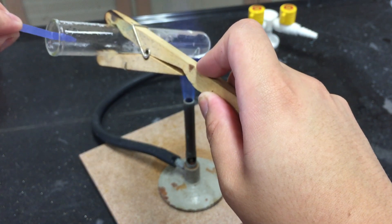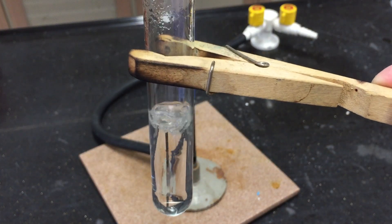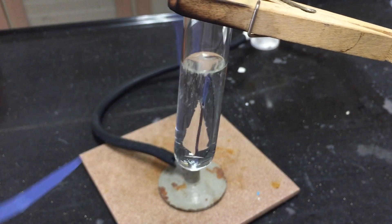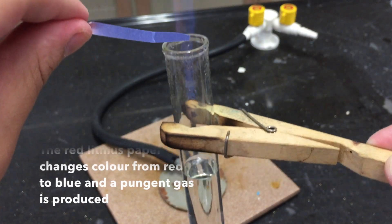You will notice that the red litmus paper changes colour almost immediately. The colour changes from red to blue.